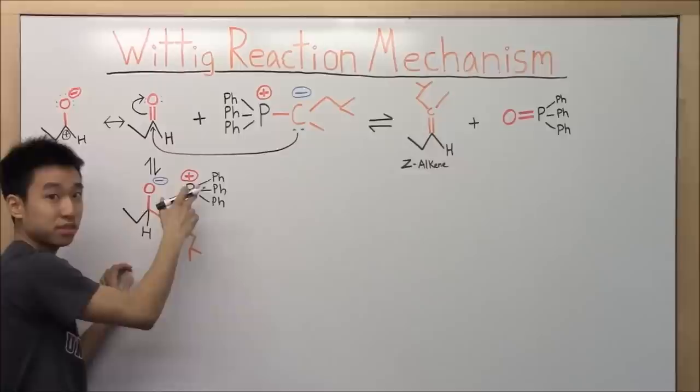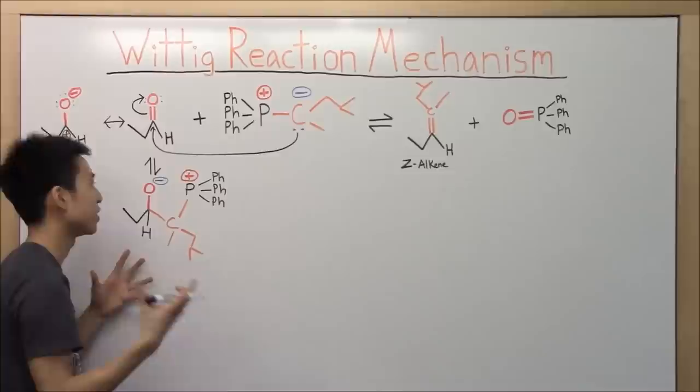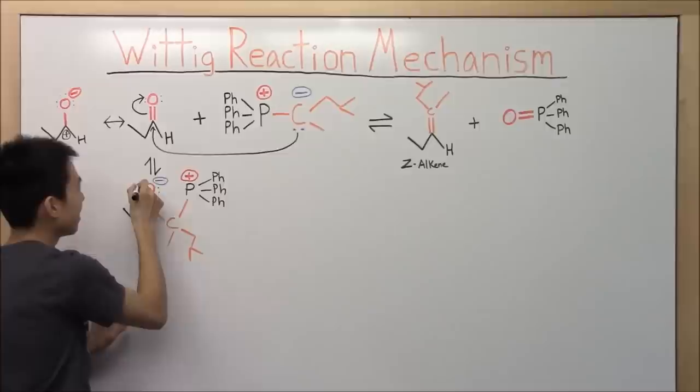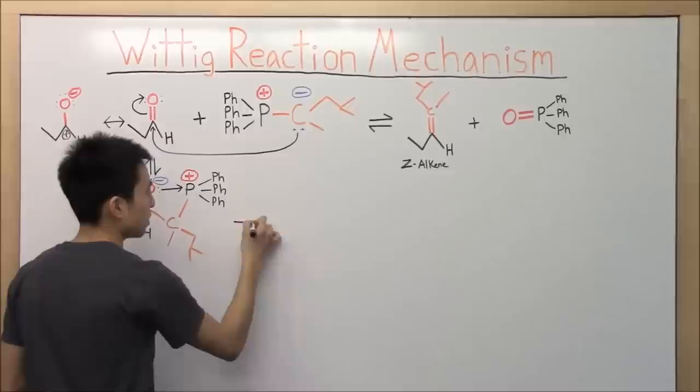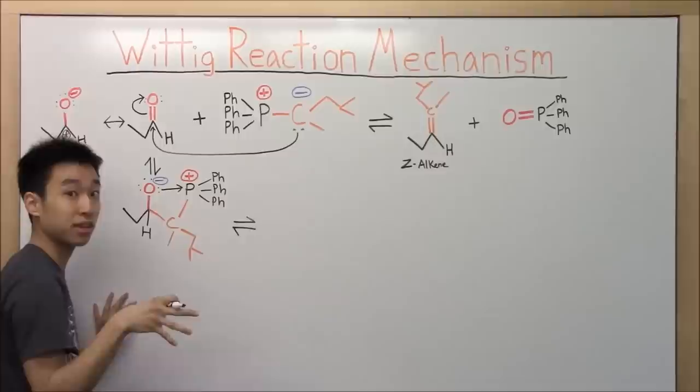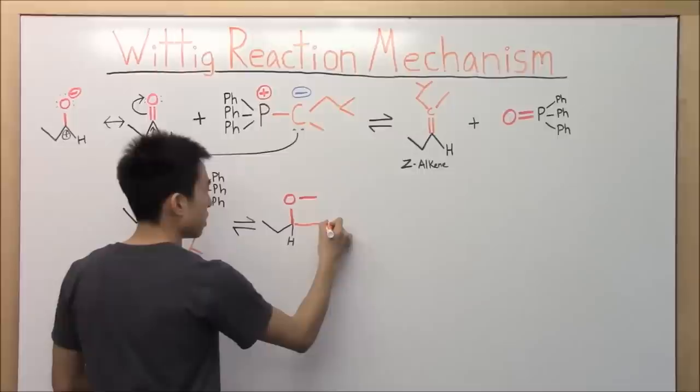All right, so now negative charge, positive charge, they attract each other in chemistry and in the real world too. But anyway, yeah, so the electrons that are on this oxygen that used to be the carbonyl, right, it reaches over and attacks the phosphorus to stabilize things. All right, so what kind of intermediate product are we going to get now? Pause my video here.